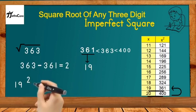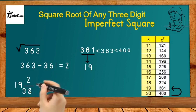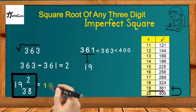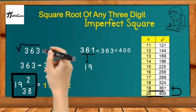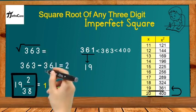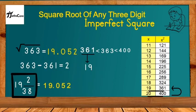We subtract 361 from 363: 363 − 361 = 2. We write down 2 and divide it by double of 19, which is 38. This gives us the mixed fraction 19 and 2/38. Simplifying and solving this into decimal form, we get 19.052, and this is the square root of the imperfect square 363.